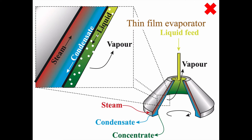A thin film evaporator is like an Alfa Laval separator — you have a spinning element and the liquid is poured in on the inside. The liquid flows down in a thin film; it's a two-wall construction with an inside and an outside. Steam is let in on the inside, condenses on the surface, and releases heat to the liquid, causing it to boil. You collect the vapor here and the condensate flows out here.